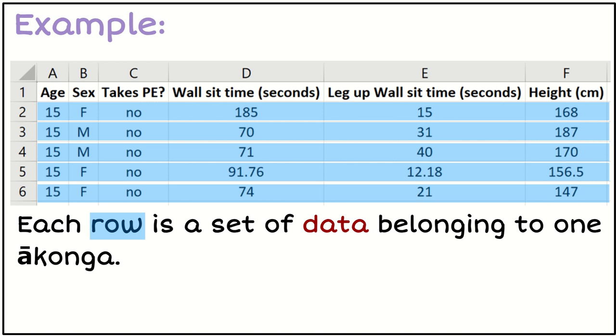is a female who does not take PE, who can do a wall sit time of 185, a leg up wall sit time of 15 seconds, and a height of 168 centimeters. Each row is one person or one Akonga's data, because this was student data that I collected.